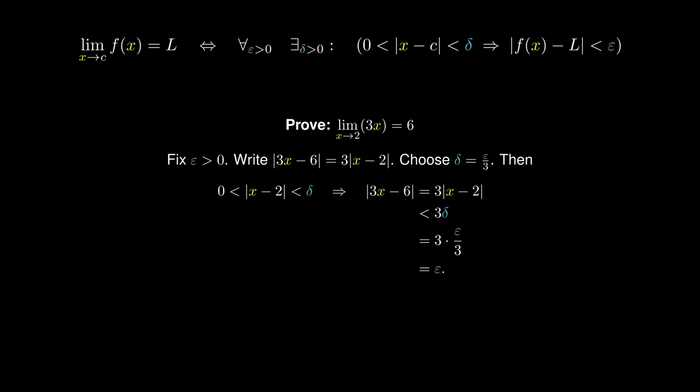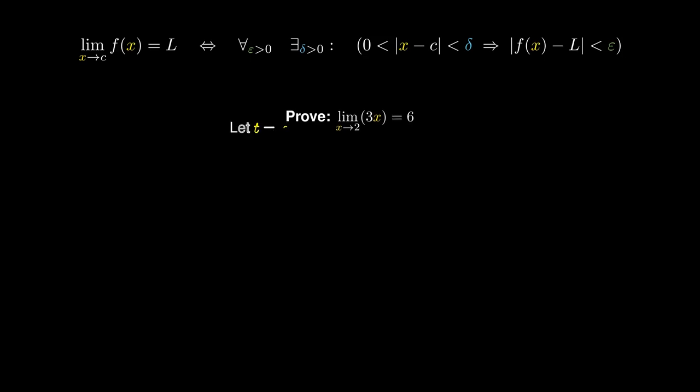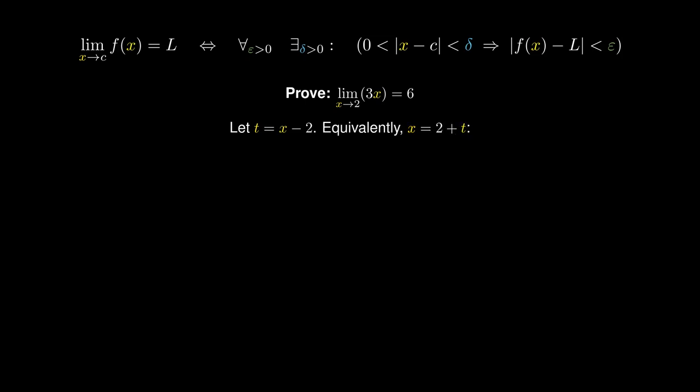However, I'd like to suggest a slightly different approach to this problem. The key trick is to use a substitution t equal to x minus 2. This encodes the problem in terms of an error with respect to 2, rather than the x values of the function. This tells us that x must equal 2 plus t. This substitution helps us do something rather remarkable.